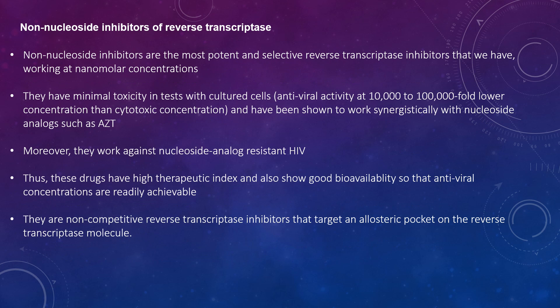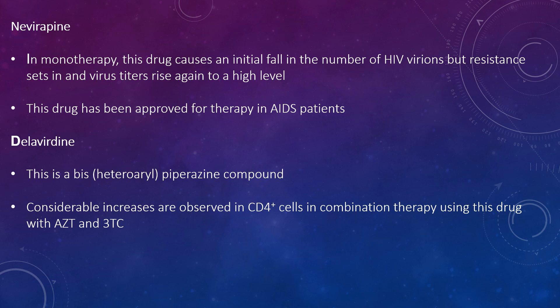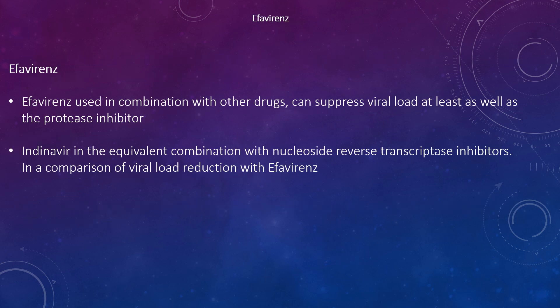Non-nucleoside inhibitors of reverse transcriptase: these are the most potent and selective reverse transcriptase inhibitors, working at nanomolar concentrations. They show minimal toxicity in cultured cells and have been shown to work synergistically with nucleoside analogs such as AZT. They also work in nucleoside-resistant HIV. These drugs should have a high therapeutic index and show good bioavailability. They are non-competitive reverse transcriptase inhibitors that target an allosteric site on the reverse transcriptase molecule. Nevirapine in monotherapy causes an initial fall in HIV variants but resistance sets in and virus titres rise. Delavirdine is a bis-heteroaryl-piperazine compound; considerable increases are observed in CD4+ cells in combination therapy using this drug with AZT and 3TC. Efavirenz is used in combination with other drugs and can suppress viral load at least as well as a protease inhibitor.